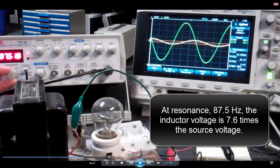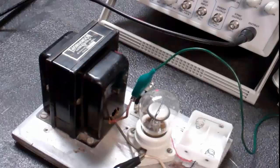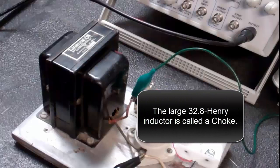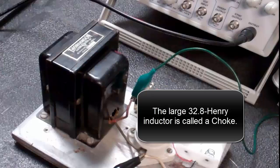At resonance, 87.5 hertz, the inductor voltage is 7.6 times the source voltage. The large 32.8 henry inductor is called a choke.